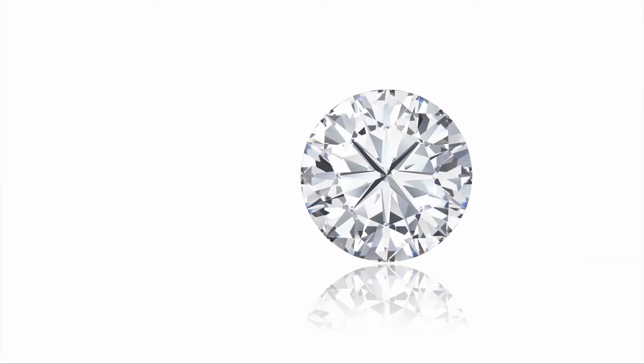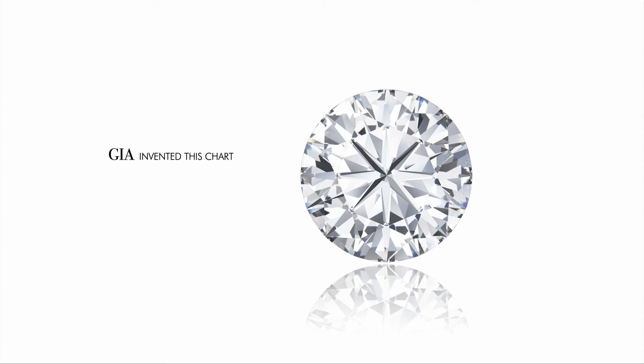The four C's of diamond quality. The quality and price of a diamond is based on four things: color, clarity, cut, and carat weight. GIA and IGI, the most renowned gemological institutes in the world, provide certificates that are necessary to have when you purchase expensive gems, whether they're diamonds or other stones. Let's explore these four things more in depth.